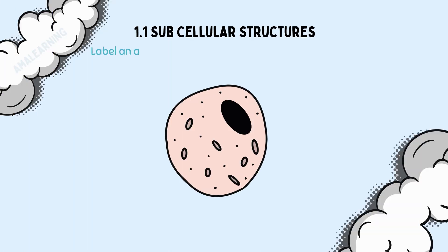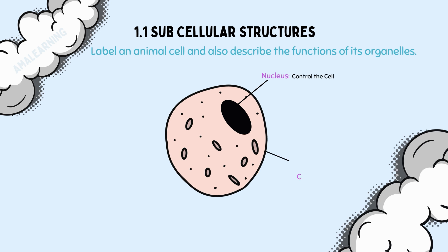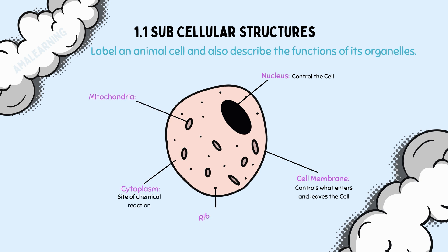In an exam, you may be asked to label an animal cell and describe the functions of its organelles. As you can see, the large black circle is the nucleus — it controls the cell. The cell membrane controls what enters and leaves the cell. The cytoplasm is where chemical reactions occur; this is where you would find the mitochondria and ribosomes. The mitochondria is where respiration occurs, which will be covered in more detail in topic 8. Finally, the animal cell has ribosomes, which are needed for protein synthesis. Note that the bacterial cell also has ribosomes used for protein synthesis, but they are much smaller.